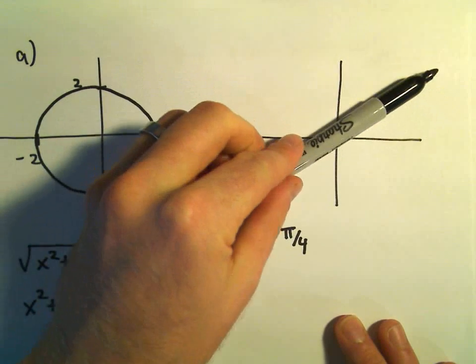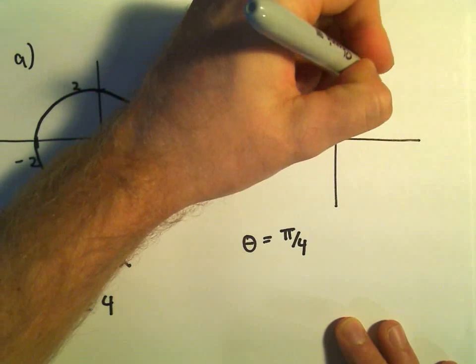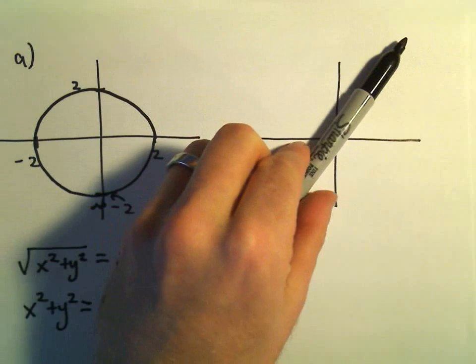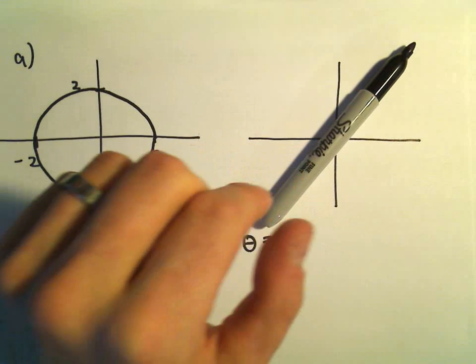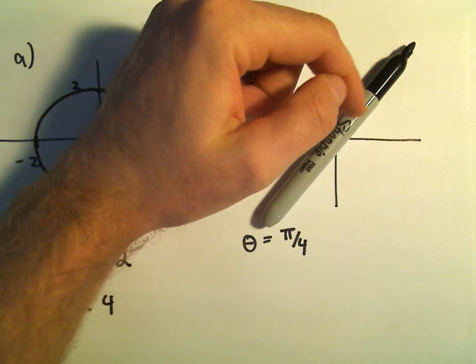It says go to an angle pi over 4. So pi over 4 would just be our 45-degree line here. So there's the angle pi over 4. And then kind of the same idea. It says always let the angle be pi over 4, but pick any r value that you want.